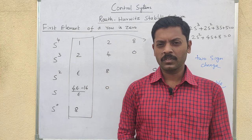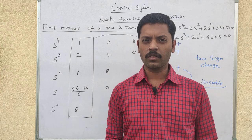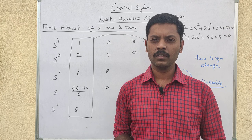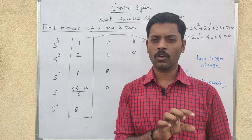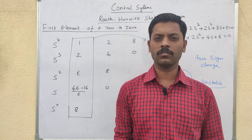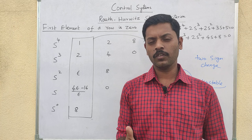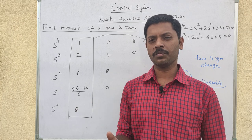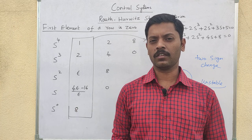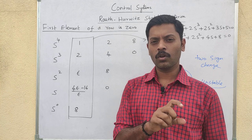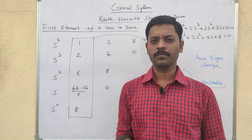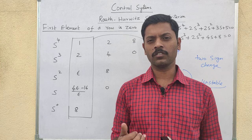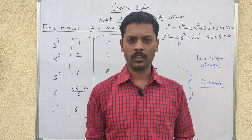So in the RH method, the first special case is when the first element of a row is zero — that is what we solved today. In the next video, we will see the second special case: when an entire row is full of zeros. Okay friends, thank you.